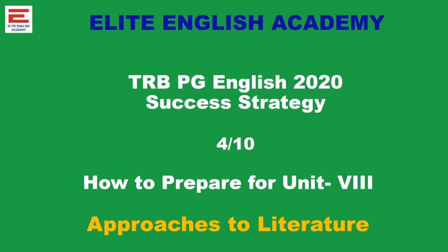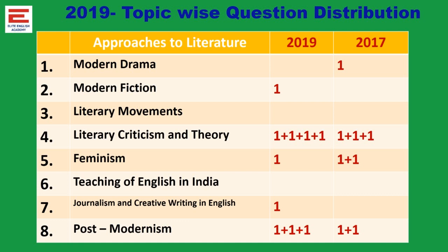This is the analysis of 2019 and 2017 questions. In the Approaches to Literature unit, there are eight topics. Maximum questions come from two areas — what is the most important? Topic 4, Literary Criticism and Theory; Topic 5, Feminism; and Topic 8, Postmodernism. You get three questions from this third group.